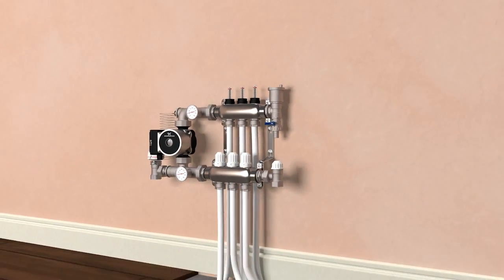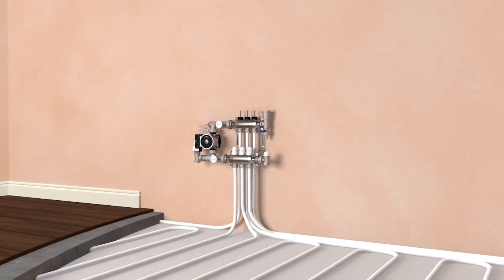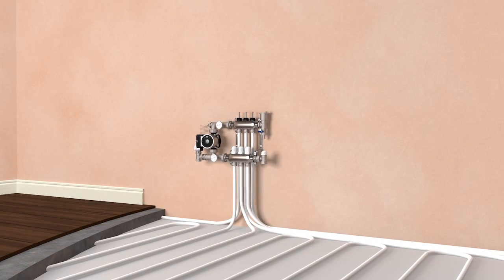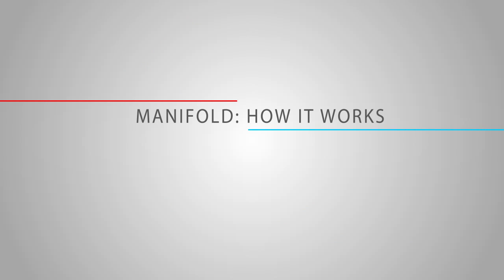The manifold is the heart of your radiant floor heating system and it distributes warm water throughout your floor heating pipe loops to heat your rooms. Here's a basic look at the water pathway around your manifold.